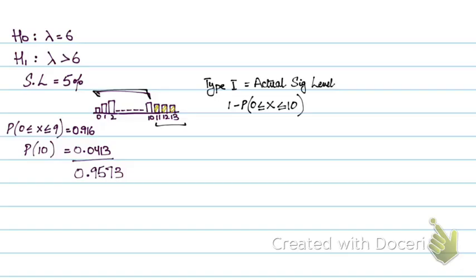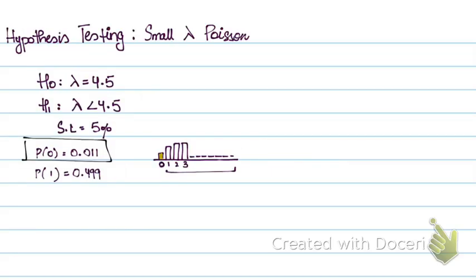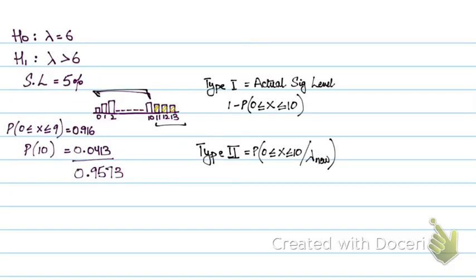For type 2 error, it's basically your acceptance region with the new lambda that will be given in the question. So it's the probability of x from 0 to 10 with the new lambda. It's your acceptance region with the new lambda. And for the left-hand side example, it's x greater than or equal to 1 with the new lambda. So that was your calculation for type 2 error. For type 1, it's your actual significance level. For type 2, it's your acceptance region with the new lambda. That's it about how to carry out a test for a small lambda Poisson.